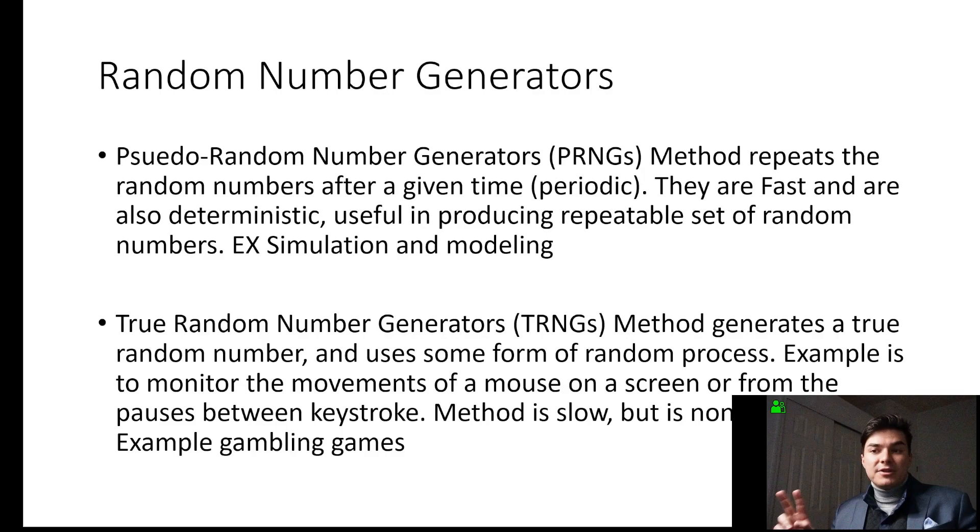Random number generators, there's two different types. There's this pseudo random number generator. It's very fast, but it's deterministic. So if someone's trying to identify the random number, it's a lot easier for them. So they use this typically for simulation and modeling, and it's not like a true random number.